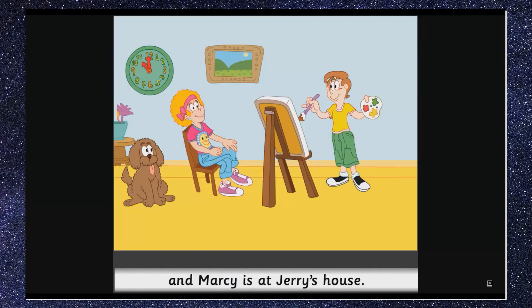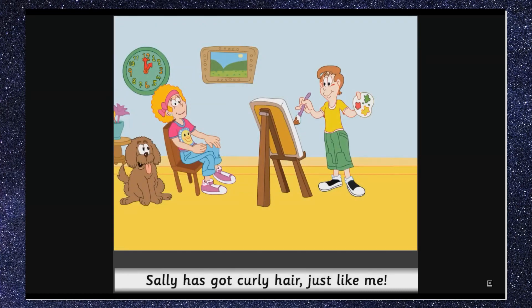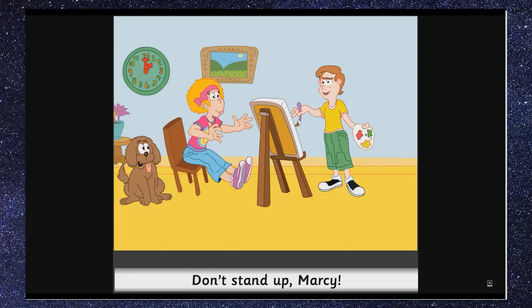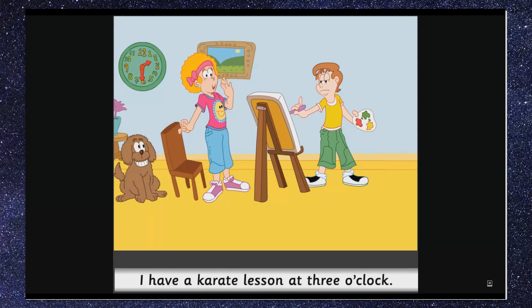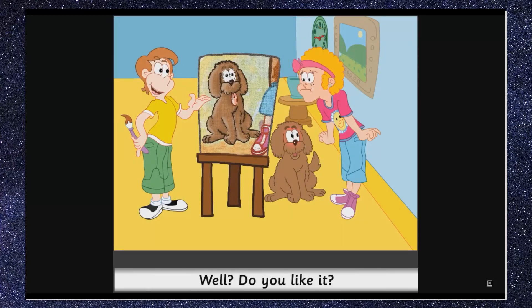The story plays a second time: It's half past three o'clock and Marcy is at Jerry's house. What's your dog's name, Jerry? Her name is Sally. Sally has got curly hair just like me, but my hair is blonde and her hair is brown. Don't stand up, Marcy. Later — What's the time, Jerry? I have a karate lesson at three o'clock. It's half past two. Can I see it now? Well, do you like it?